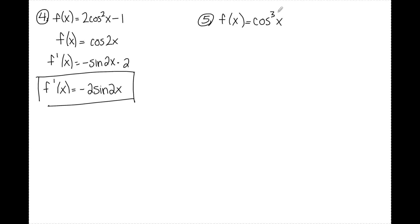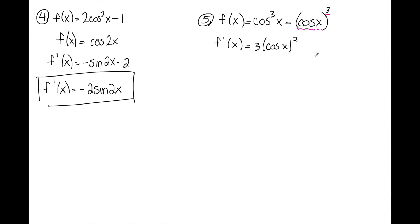Number 5: f of x equals cosine cubed x. With this notation, what this really means is cosine of x, all cubed — that's the notation we use when we have an exponent attached to a trig function. I can see I'll use a chain rule where cosine of x is the inside and something to the third is the outside. When I find f prime, I do a power rule first: bring the 3 to the front, leave cosine x alone, drop the exponent by 1 to the second. Then times the derivative of the inside: the derivative of cosine x is negative sine x. Cleaning up: bring the negative to the front giving negative 3 cosine squared x times sine x.